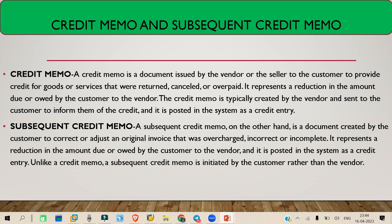First, let's understand what a credit memo is. Basically, a credit memo is a type of document your vendor can send to you. For example, let's say you received 100 quantity of material, and 20 of those are damaged. You have sent that material back to the vendor, and now your vendor will send you a credit memo for those 20 quantities.